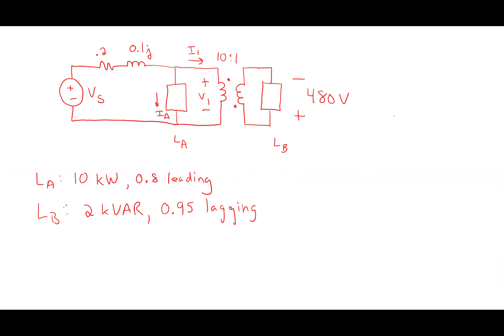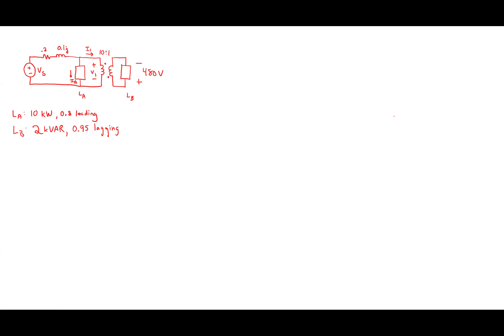Here's the problem we're going to work through. I've got two loads — Load A and Load B — connected across a transformer. I want to find the power triangles for both loads, find currents I1 and I2, and then determine how to do power factor correction to achieve unity power factor.